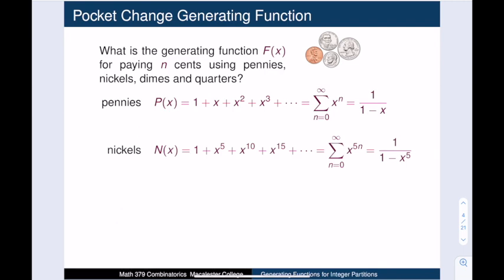What if we want to pay in nickels? We can only succeed when n is a multiple of 5, so there is one way for n = 0, 5, 10, 15, and so on, and zero ways for all other values. Therefore, the generating function for paying with nickels is 1 + x⁵ + x¹⁰ + x¹⁵ + ... This is a geometric series with x⁵ in place of x, equal to 1/(1 − x⁵).